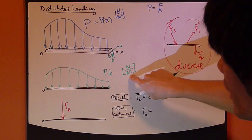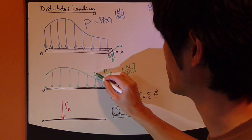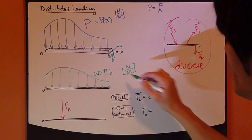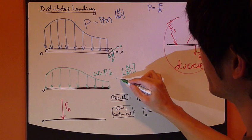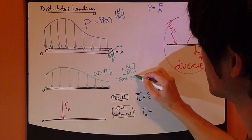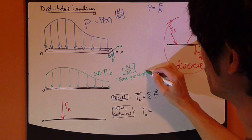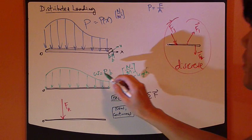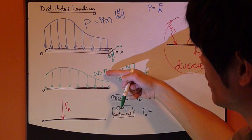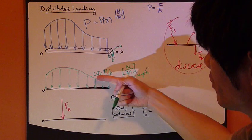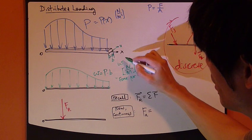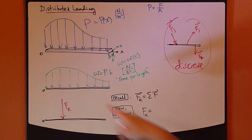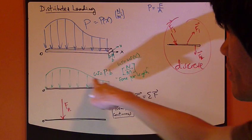Force per length. I'll just call it w. So this can be thought of as force per unit length. So w, now keep in mind that this pressure is a function of x. So therefore w is also a function of x.